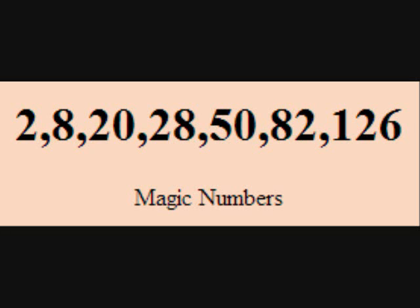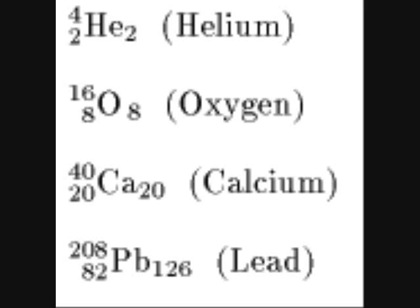Oxygen has both a magic number of protons and neutrons, making it a doubly magic nuclide, which makes it really stable and therefore the third most abundant.